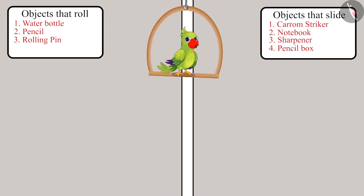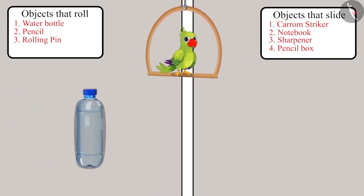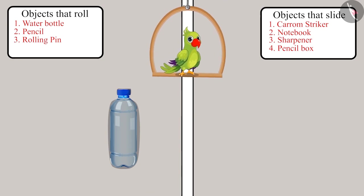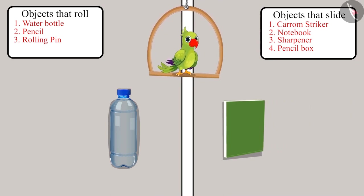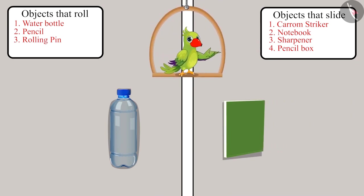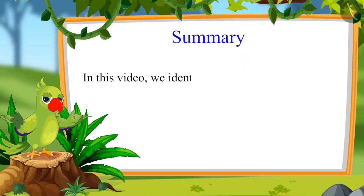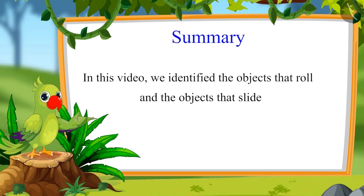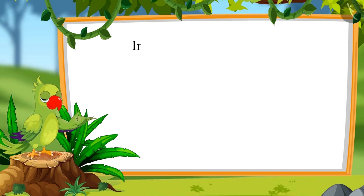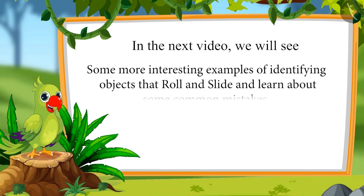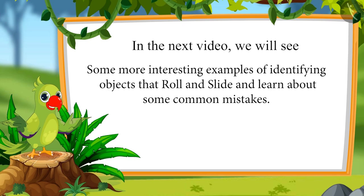So children, you saw that objects whose surface is circular always roll on the floor, and those whose surface is not circular always slide on the floor. In this video we identified objects that roll and objects that slide. In the next video we will see some more interesting examples and learn about some common mistakes that should not be made. Till then, bye children!